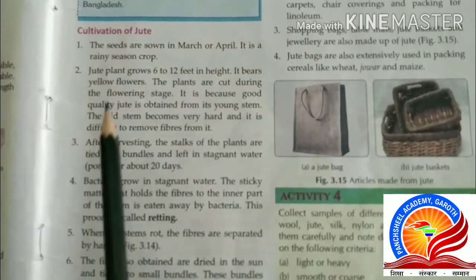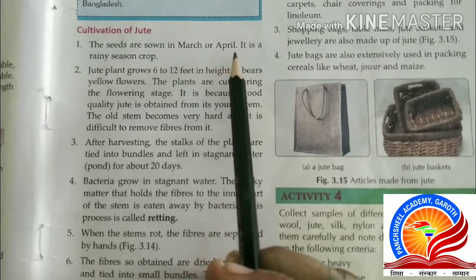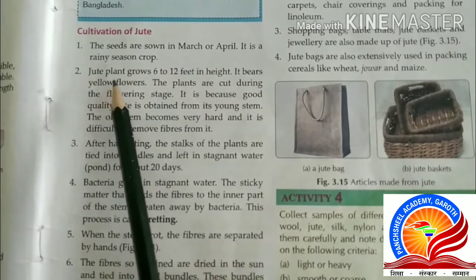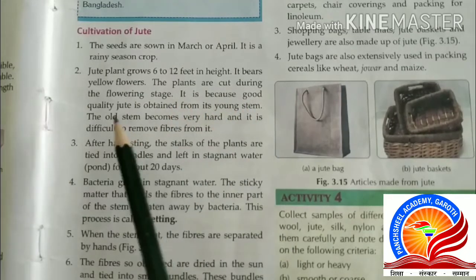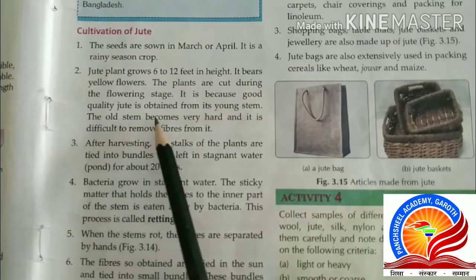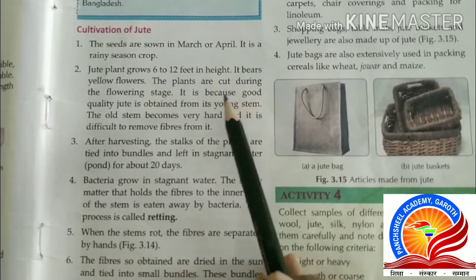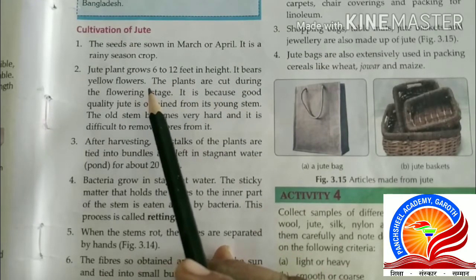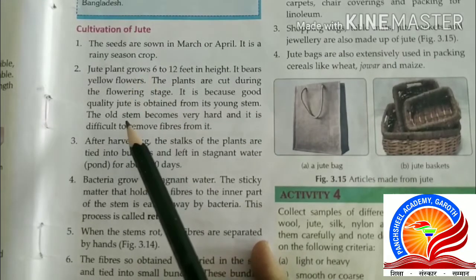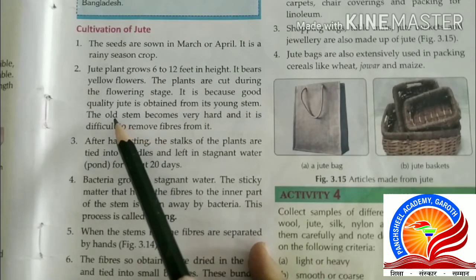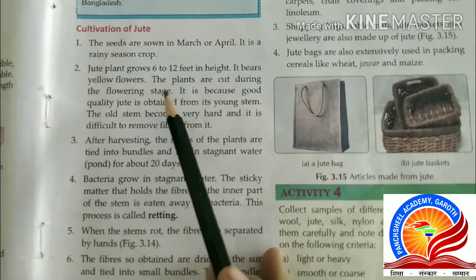Cultivation of jute: the seeds are sown in March and April. It is a rainy season crop. Jute plants grow up to 6 to 12 feet in height and bear yellow flowers. The plants are cut during the flowering stage because good quality jute is obtained from young stems. Old stems become very hard and it is difficult to remove fibers from them. At the flowering stage, jute plants are harvested.